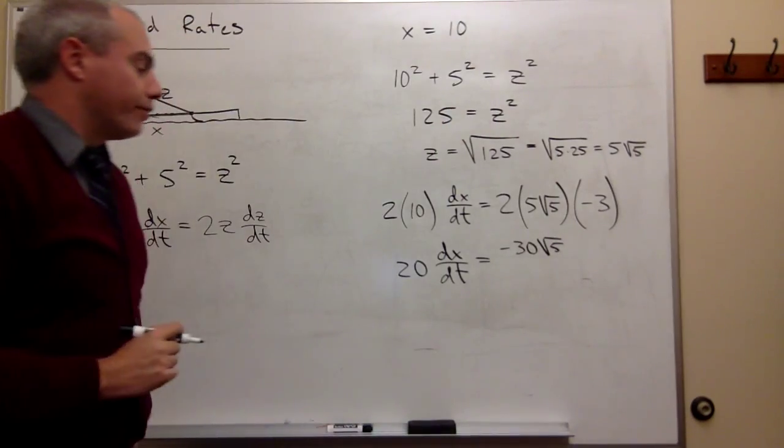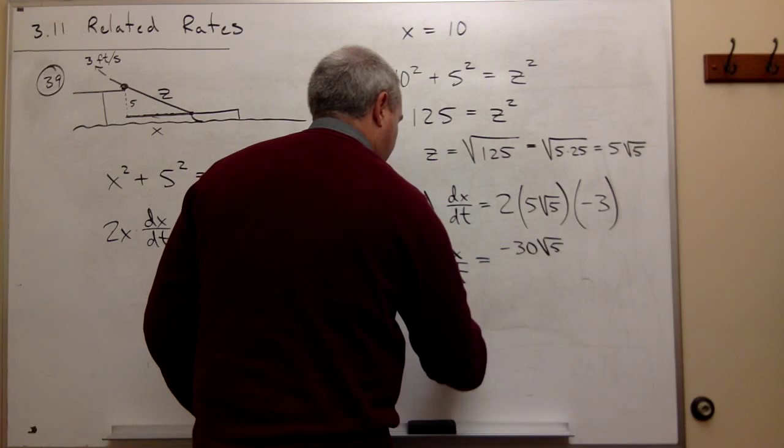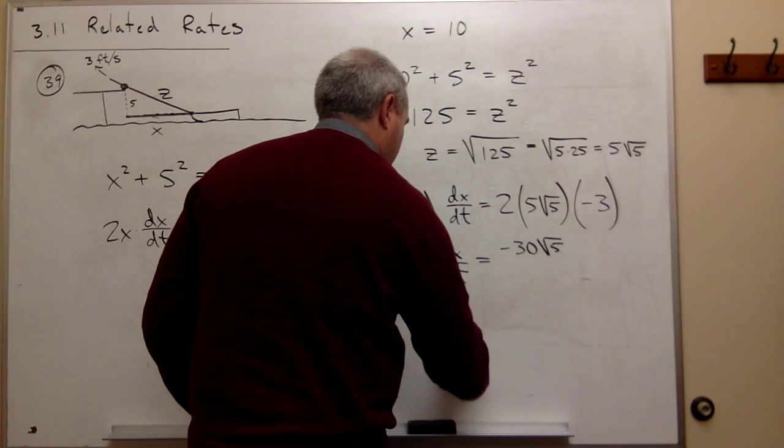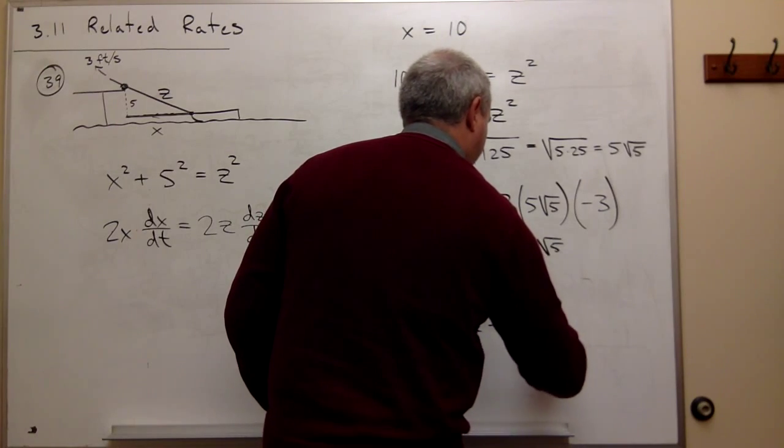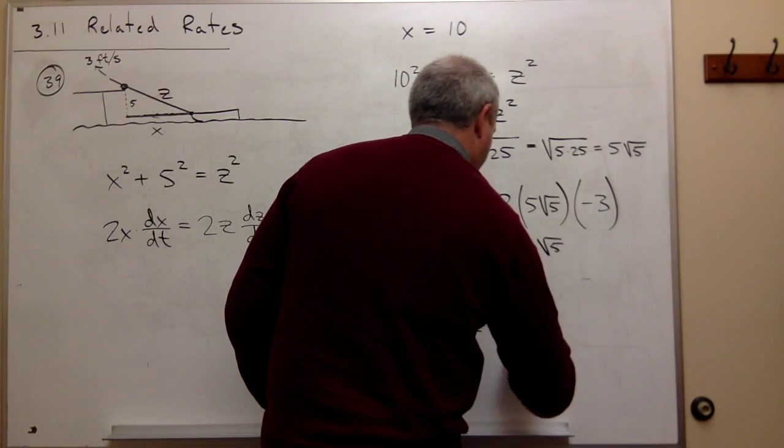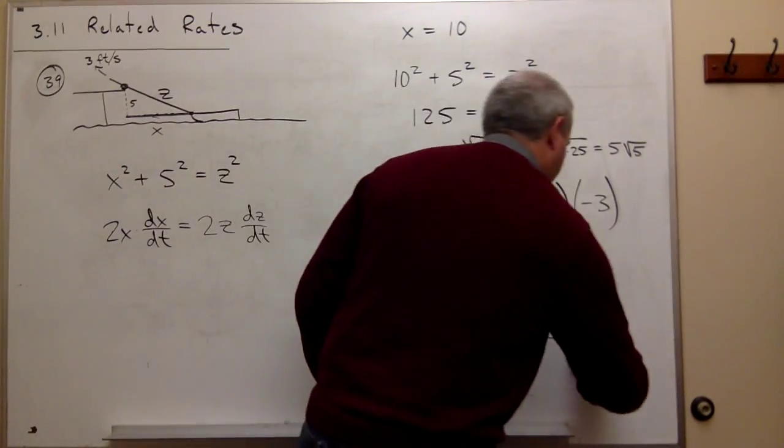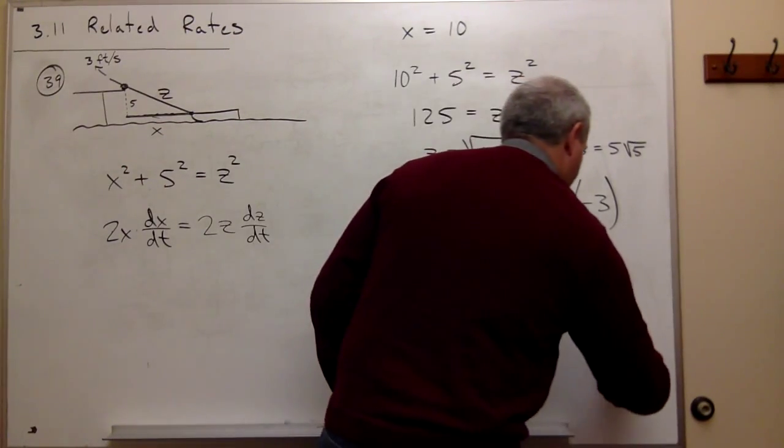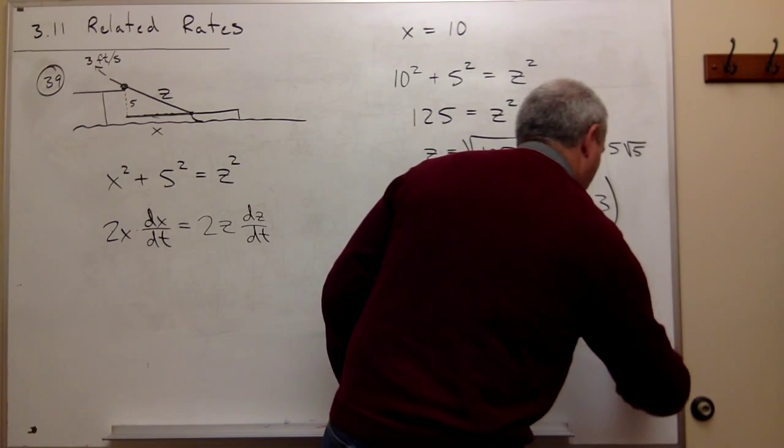Now I can divide both sides by 20, and I get dx/dt is equal to -30√5 divided by 20. Or if you prefer, we could simplify a little bit and we get -3√5/2.